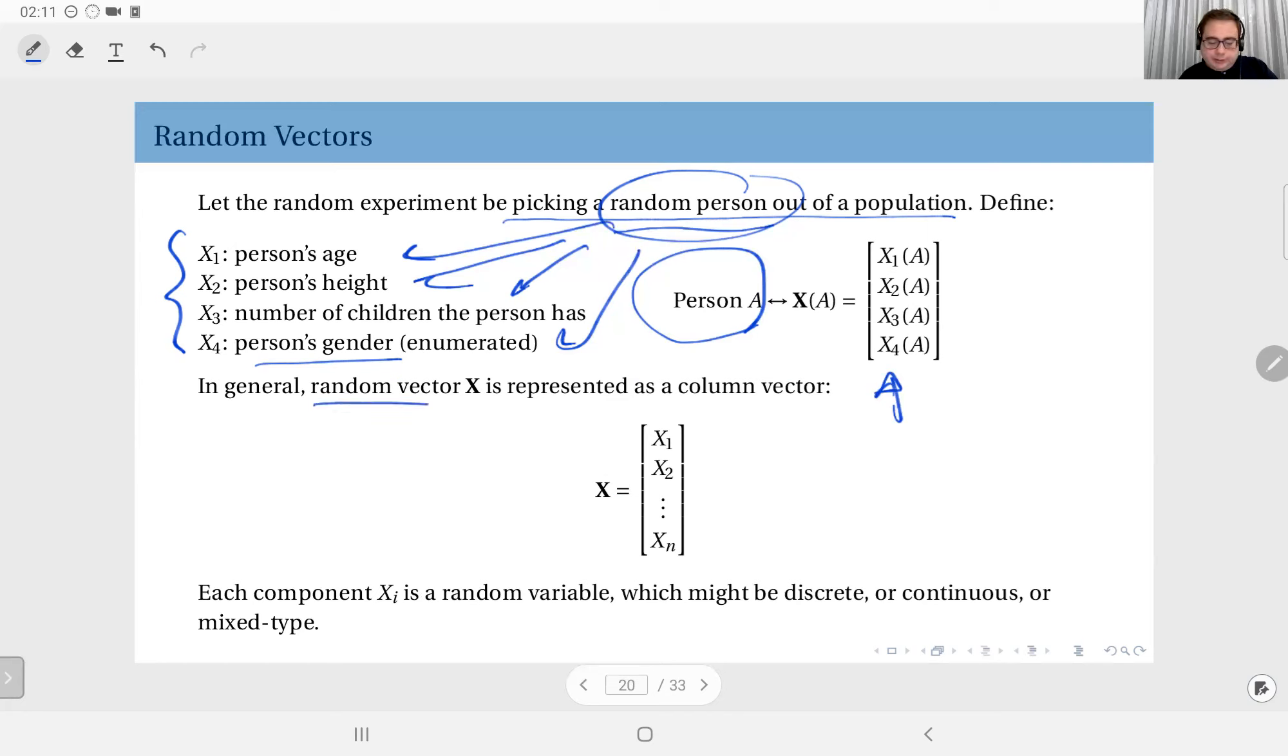In general, a random vector X is represented as a column vector. We will use this representation throughout the course. In other resources you might see different representations, but this is the one we prefer, and my notation will be a capital letter with upright and bold.